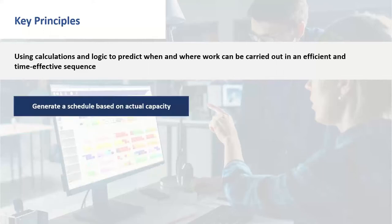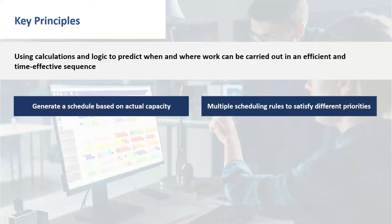The scheduler will generate a schedule based on your actual capacity — we'll talk about the differences between infinite and finite capacity later. It will enable you to try different options: whether you want to prioritize certain work, put on overtime and see the impact, or how you prioritize work generally. Do you automatically schedule by delivery date — the things you need tomorrow, the things you should be making today? You'll see examples where that may not be the best solution.